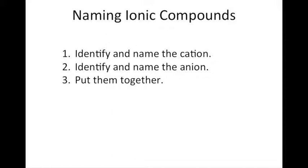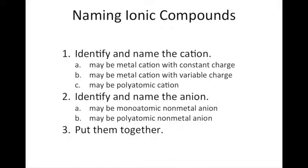When naming ionic compounds given the formula, we first identify and name the cation, then identify and name the anion, and then put those two names together to get the name of the compound. The cation may be a monoatomic metal cation with a constant charge, a monoatomic metal cation with a variable charge, or a polyatomic cation. The anion may be a monoatomic nonmetal anion or a polyatomic nonmetal anion, both with a negative charge. Monoatomic means it's made up of only one type of atom.